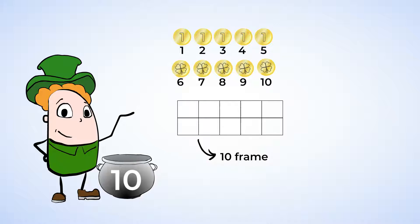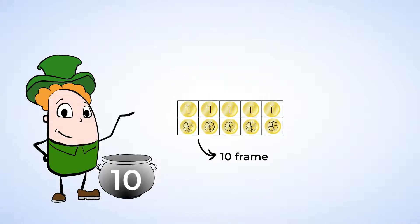And how many squares are on top? Well, if we count them, we'll see one, two, three, four, five, just like a five frame. And there's another five frame on the bottom, too. So let's put the gold coins in the ten frame. And here are the first five, and here are the five that the leprechaun dropped in.